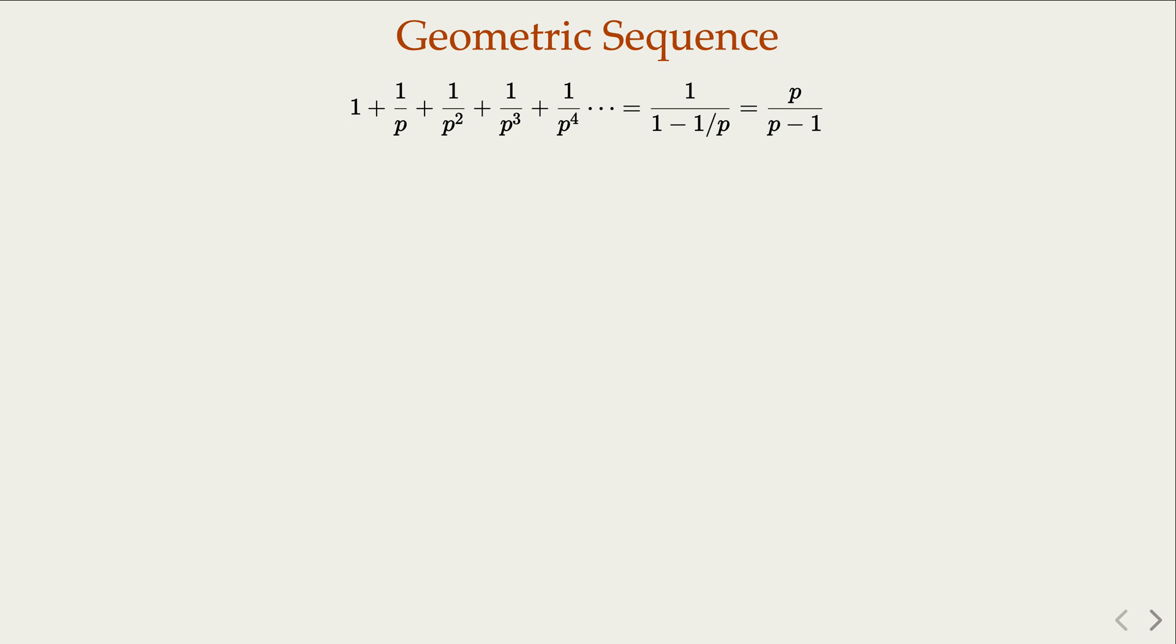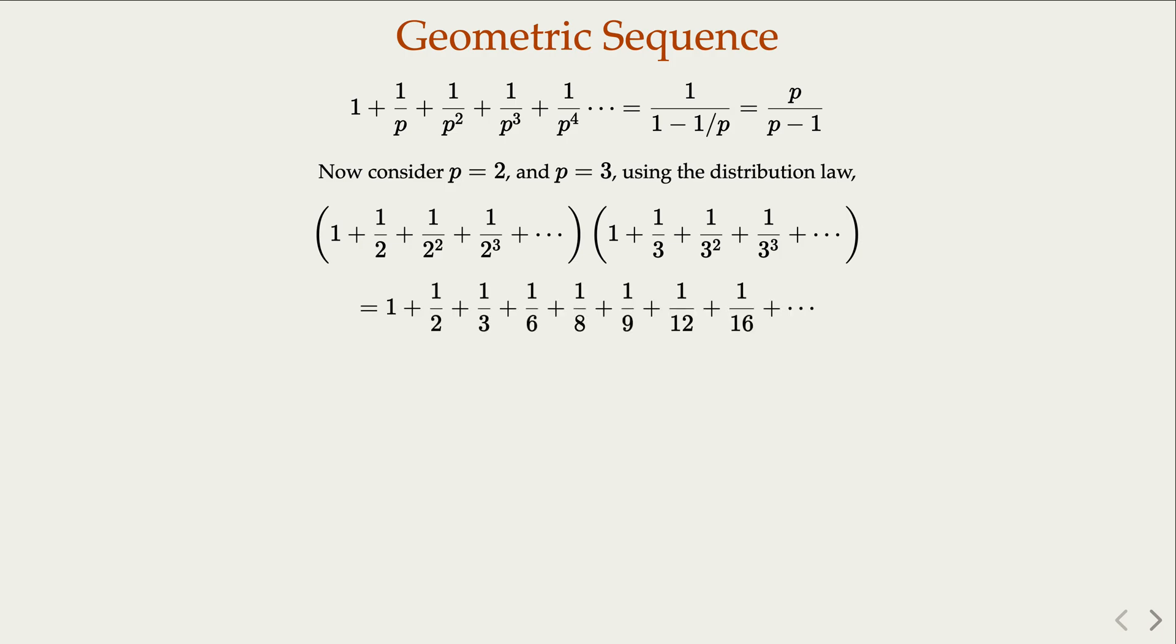Now you can use any prime numbers here. Let's take p to be 2 and 3, and let's multiply the two terms together. Using the distribution law, you can expand this product of two infinite terms into another infinite term like that.